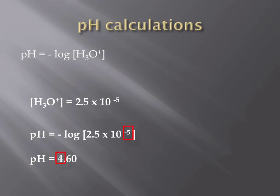Like before, there's a pretty easy way to double-check your answer without using a calculator. Your pH value should be 1 less than the exponent for your hydronium ion concentration, as highlighted here. The pH is 4.6 and the exponent is 5.